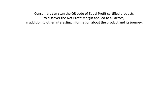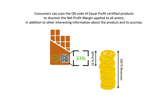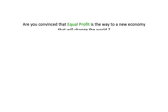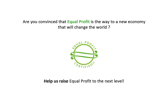Consumers can scan the QR code of Equal Profit Certified Products to discover the net profit margin applied to all actors, in addition to other interesting information about the product and its journey. Consumers' feedback on the selling price is also gathered via the Equal Profit platform. Are you convinced that Equal Profit is the way to a new economy that will change the world? Help us raise Equal Profit to the next level.